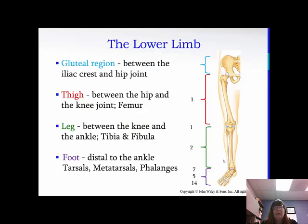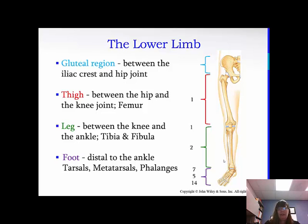The lower limb: you have the gluteal region, which is between the iliac crest and the hip joint; the thigh between the hip and the knee joint, which has your femur; the leg between the knee and the ankle, which has your tibia and fibula; and the foot, which is distal to the ankle and is made up of the tarsals, metatarsals, and phalanges.